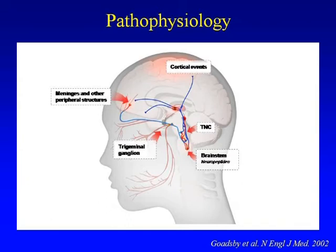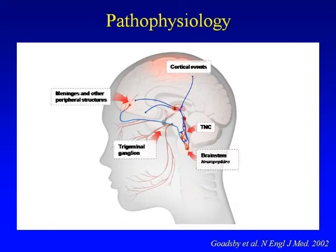When individuals complain about allodynia or increased sensitivity, it has been postulated that there is increased excitability of neurons at the second- and third-order neuron levels. Another important event is migraine aura, where we have cortical spreading depression — depolarization of neurons that starts in the occipital cortex and moves slowly to the parietal cortex. Some researchers believe this neuronal activity connects to the thalamus and brainstem structures, activating nociceptive pathways.